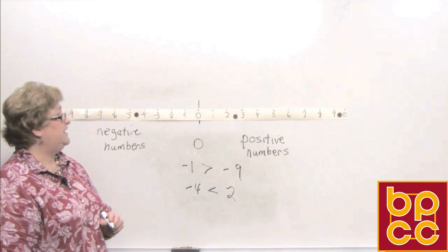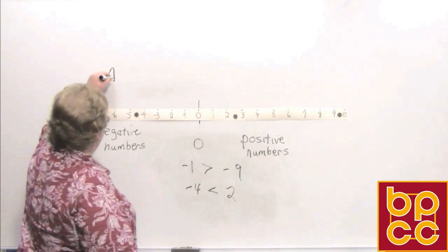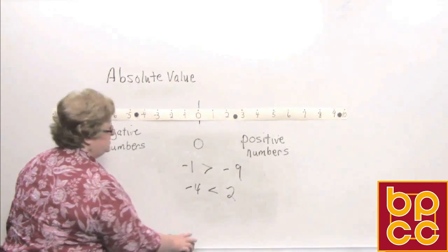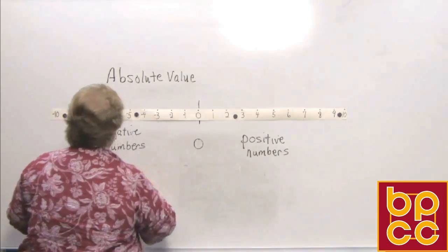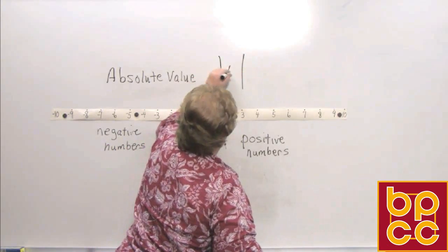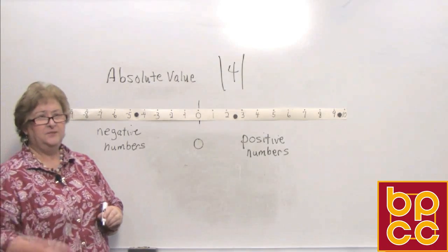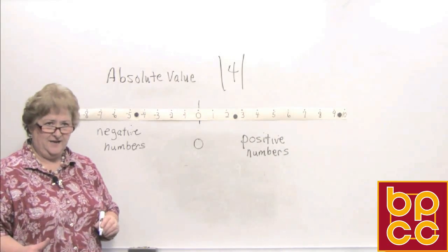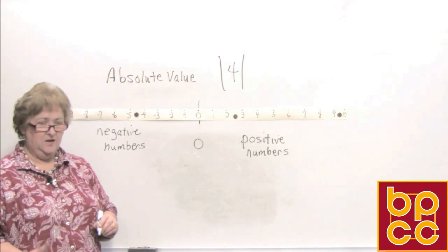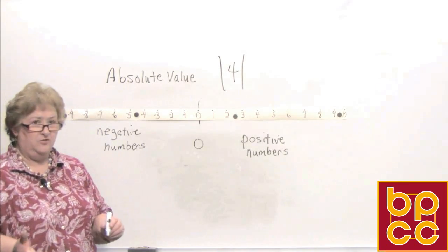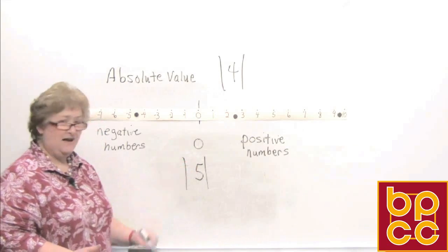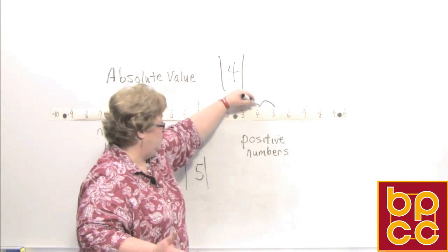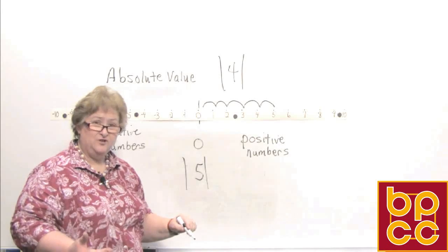Now let's look at something called absolute value. Absolute value simply means how many jumps to get back to 0 — so it's never negative. It's not negative jumps or positive jumps; it's just jumps back to 0. If I were to say what is the absolute value of 5, I would go to 5 and count how many jumps to get back to 0: 1, 2, 3, 4, 5. It's 5 jumps to get back to 0.